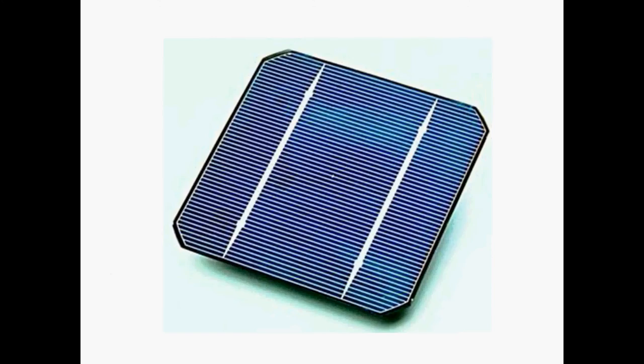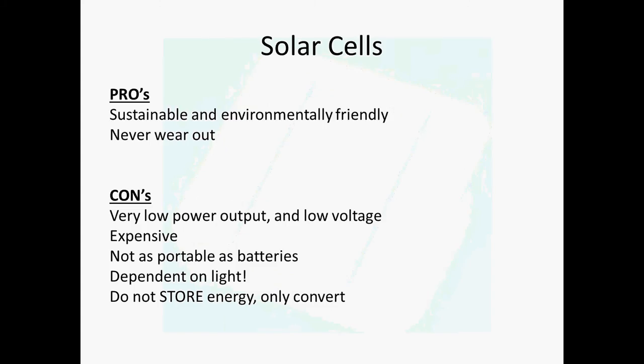Moving on — this is a solar cell. It converts solar energy, as in UV light, into an electrical voltage or current. Great for the environment — the greenies will love you. They never really wear out; they do get dirty and less efficient over time but don't wear out like a battery. The biggest problem is they are rubbish at making energy — this is why you don't see solar powered cars on the roads.